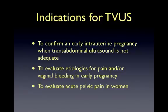Three indications for transvaginal ultrasound in the emergency medicine setting include: confirming an early intrauterine pregnancy when transabdominal ultrasound is not adequate, evaluating etiologies for pain or vaginal bleeding in an HCG-positive female, and evaluating acute pelvic pain that may be explained by ovarian pathology.